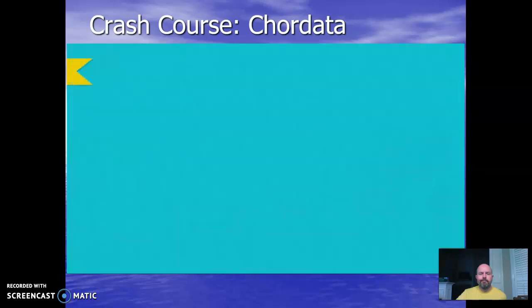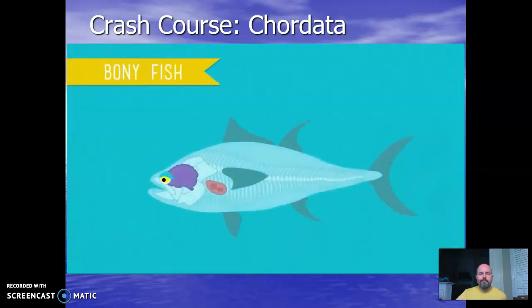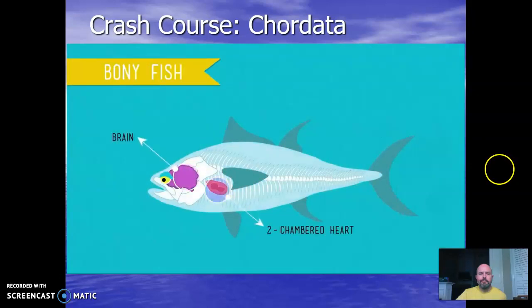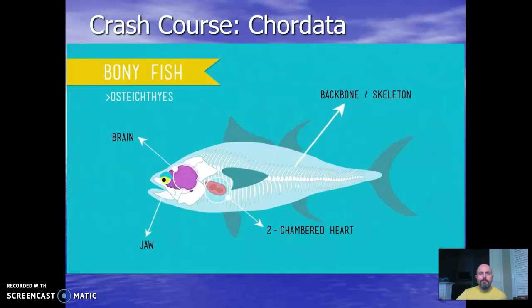To eventually get to the mammals, we need bones, and we find those with the evolution of bony fish. Meet Osteichthyes — technically the bony fish. Unlike cartilaginous fish, members of this group have a mineralized endoskeleton. Osteichthyes is sometimes considered a superclass because it includes a whole slew of diverse classes. The majority of all vertebrates fall under Osteichthyes — and that includes humans.